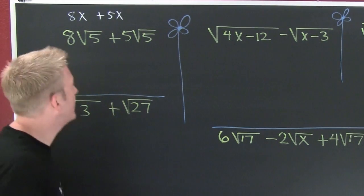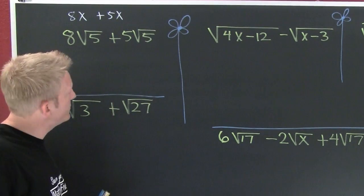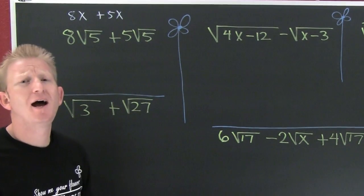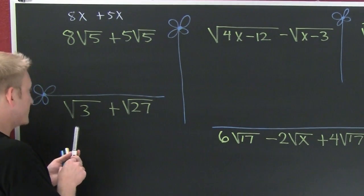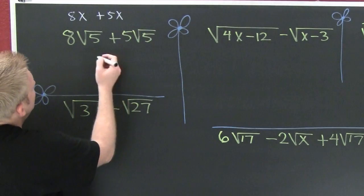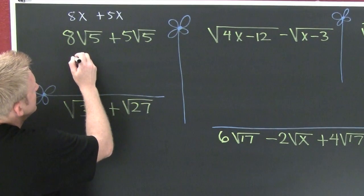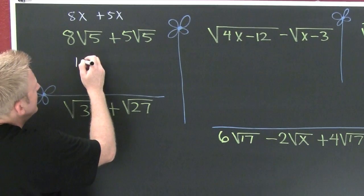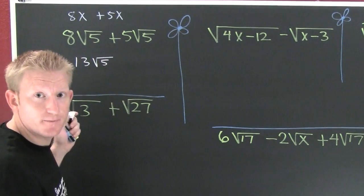Eight roots of five and somebody comes along and gives you another five roots of five. You just add the outside numbers: eight and five gives me thirteen roots of five.